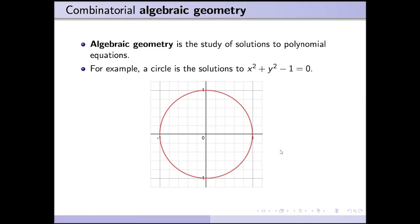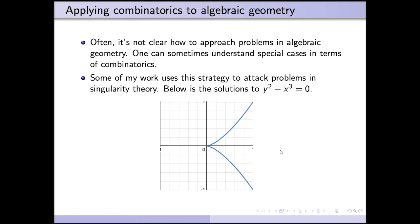Combinatorial algebraic geometry can mean two things. One thing is that you can try to apply combinatorics to solve algebraic geometry problems.